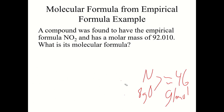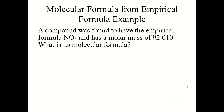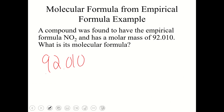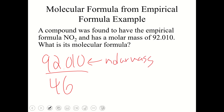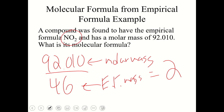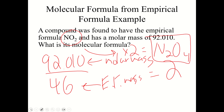Take the given molar mass of 92.010 and divide by the empirical formula mass of 46: 92.010 ÷ 46 = 2. So multiply the empirical formula NO2 by 2. The molecular formula is N2O4.